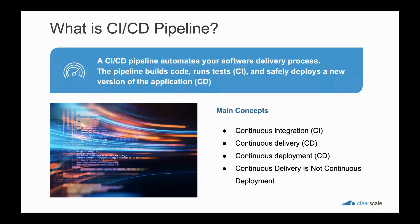We need to keep in mind that continuous delivery is not the same as continuous deployment. One misconception about continuous delivery is that every change committed is applied to production immediately after passing automated tests. However, the point of continuous delivery is not to apply every change to production immediately, but to ensure that every change is ready to go to production. Before deploying to production you can implement a decision process to ensure that the deployment is authorized and audited. Using continuous delivery, the decision to go live becomes a business decision, not a technical one — the technical validation happens on every commit.